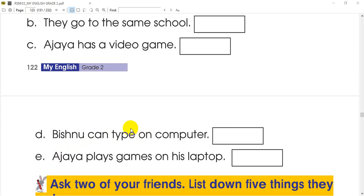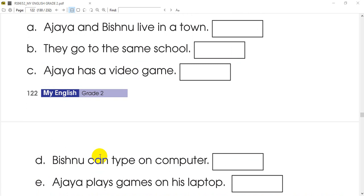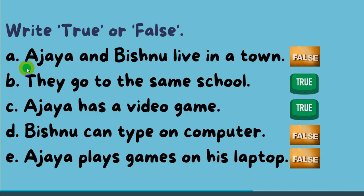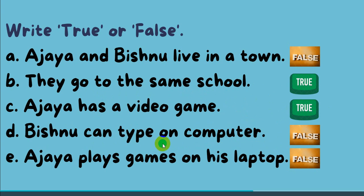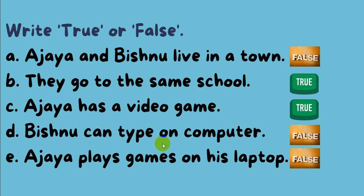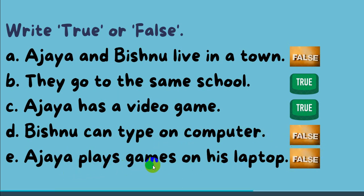If you have a laptop, you can type on your computer. If you have a laptop, you can play games on your laptop. Ajay and Bishnu live in a town — this is false. They live in a village. Do they go to the same school? This is true. Ajay has a video game — this is true. Bishnu can type on a laptop, not a computer — this can be false. However, a laptop is clearly a laptop. Ajay plays games on his laptop, not a computer — this should be false.